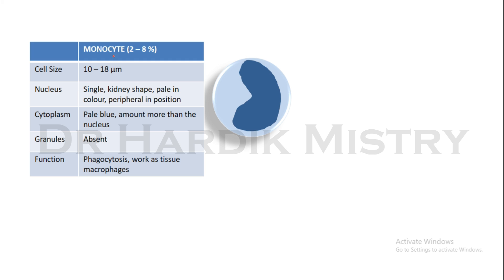Now the monocyte. Differential count of the monocyte is 2 to 8%, meaning out of 100 WBCs we find 2 to 8 monocytes on a normal basis. Cell size is 10 to 18 micrometers or even more. Nucleus is single, kidney-shaped, pale in color, peripheral in position. Cytoplasm is pale blue with more amount than the nucleus. Granules are absent. Function: phagocytosis and works as tissue macrophages.